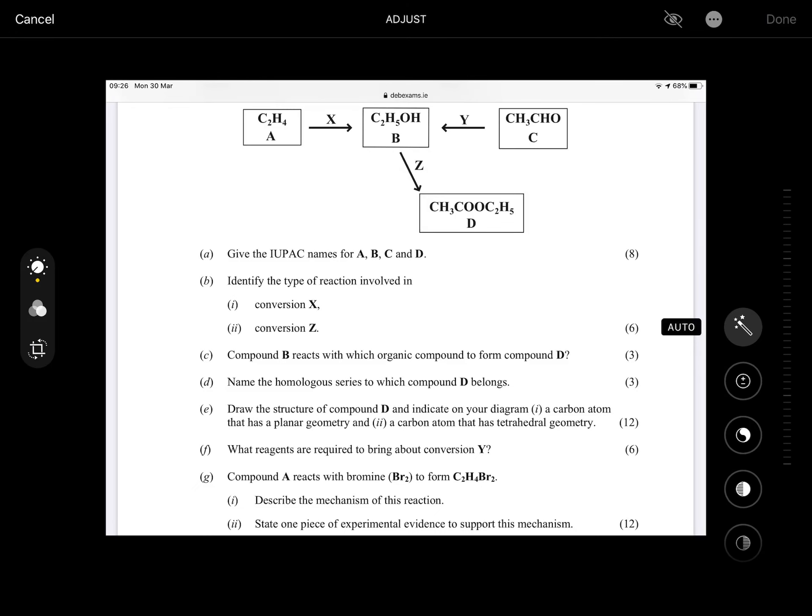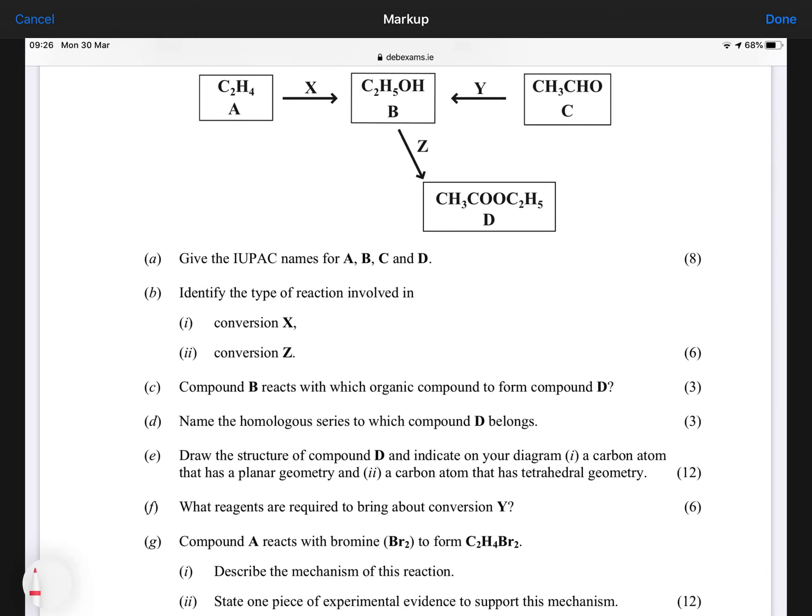Now, the next one here then that you had to do. Now, giving the IUPAC names. So again, like I was saying in the previous question, draw them out. So there's ethene. So you'd name that ethene. And I'll just draw out, that one there is ethanol, you'd be familiar with that.